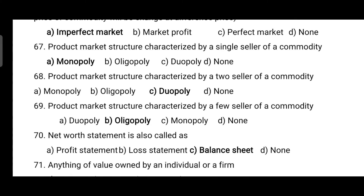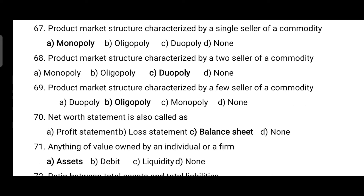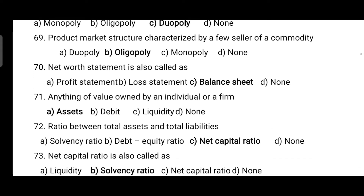A product market structure characterized by a single seller of a commodity is monopoly. A product market structure characterized by two sellers of a commodity is duopoly. A product market structure characterized by few sellers of a commodity is oligopoly.